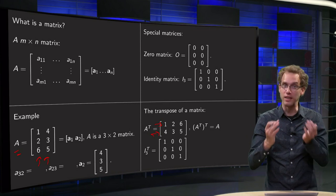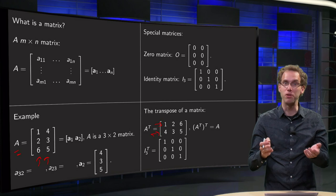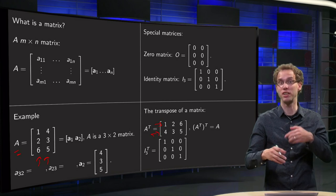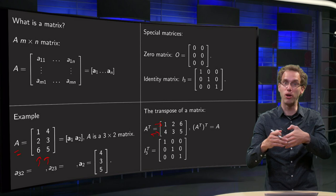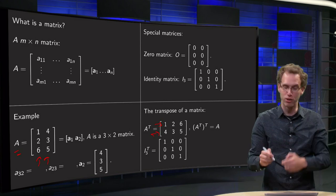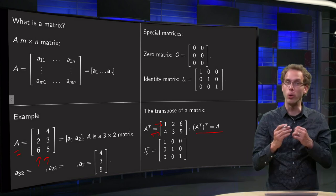And of course, if you have your A transpose, you take the transpose again. Well, taking the transpose is interchanging rows and columns, so if you interchange rows and columns and do it again, then you are of course back at your original matrix.